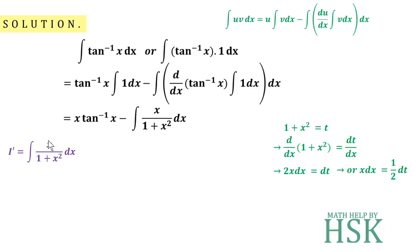1 plus x square will be replaced by t, so I get this as equal to 1/2 times the integral of 1 over t dt. The integration of 1 over t equals log t, so this will be 1/2 log t. Placing the value of t as 1 plus x square, I get 1/2 times log of 1 plus x square plus C, which is my required answer.